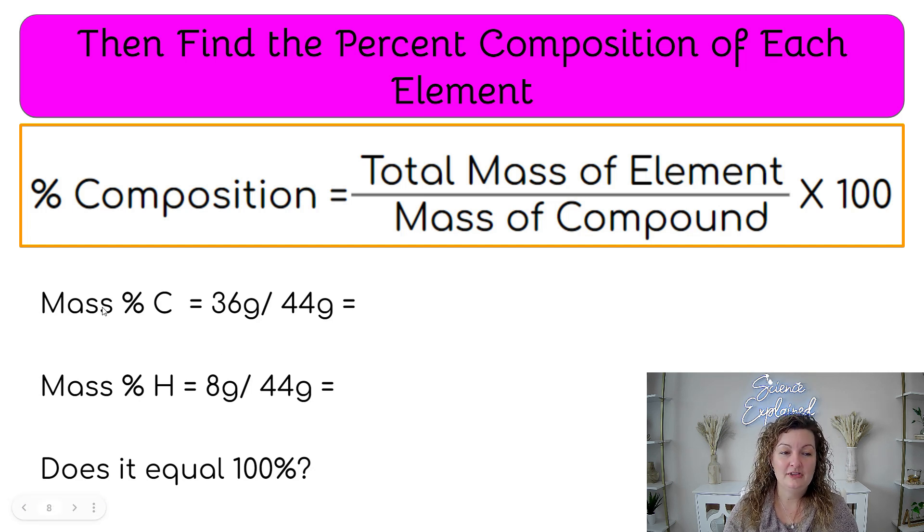So here I broke them down. Here's the mass percent for carbon, and we are going to do 36 grams divided by what was our total, and our total was 44. If we go ahead and get that, it is 0.82. Multiply it by a hundred, and it is 82%. So the majority of propane is carbon.